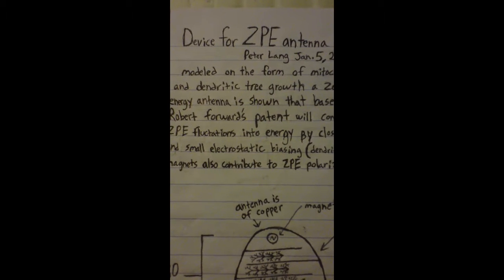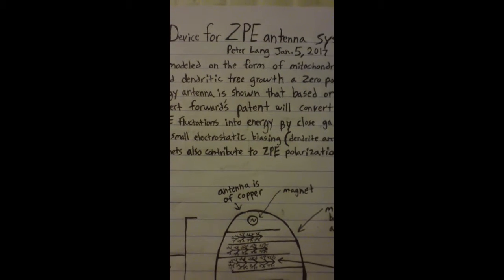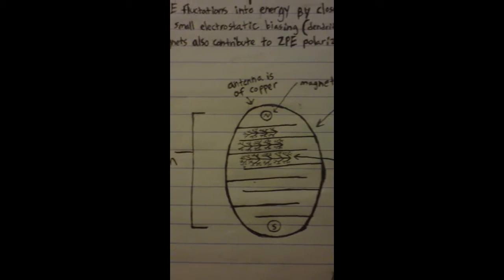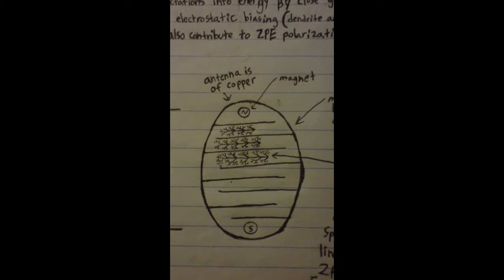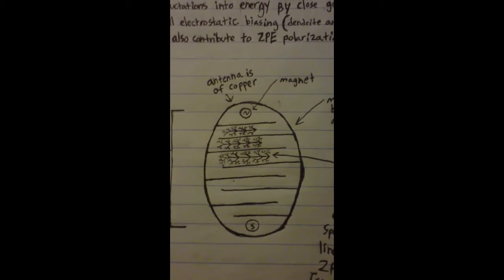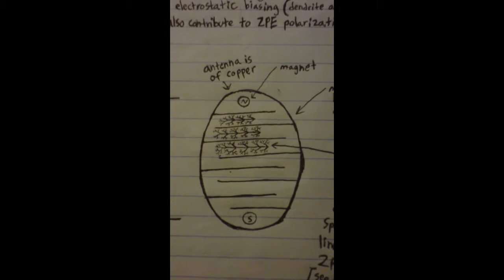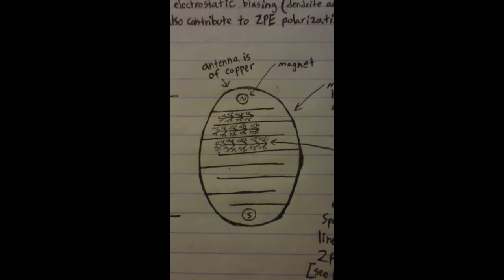Because this is zero-point energy, they're on the nanometer scale. This is a version of his antenna, 30 nanometers in length. It's modeled on the mitochondria. The structure of the antenna looks very similar to the structure of mitochondria in human cells.